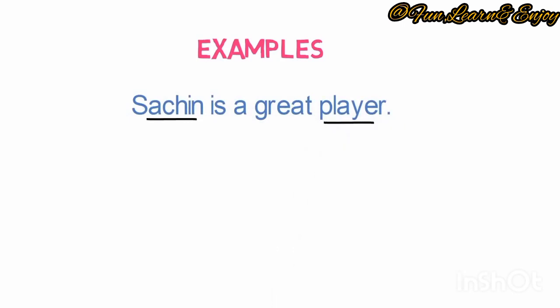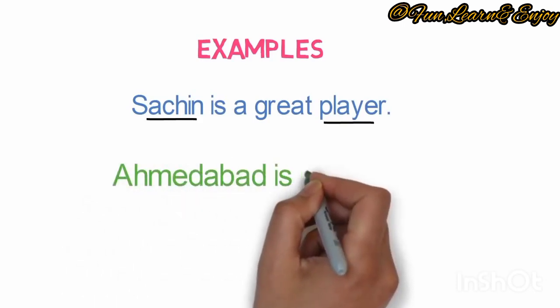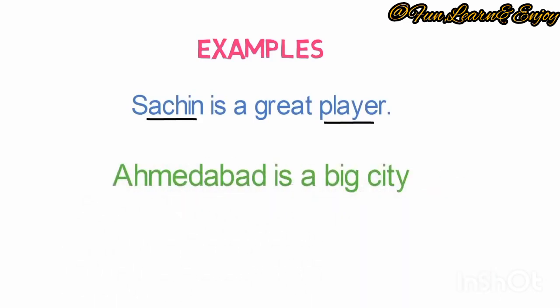Let's look into another example. Ahmedabad is a big city. Here, Ahmedabad and city both come in the category of place. So they are nouns.